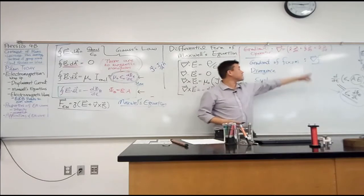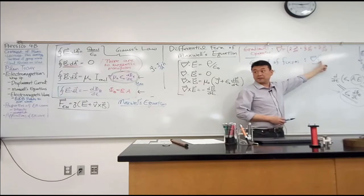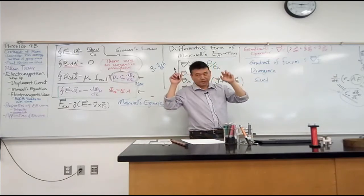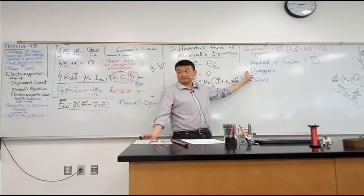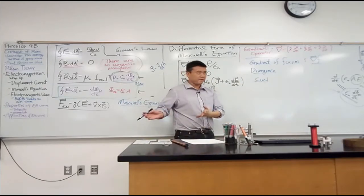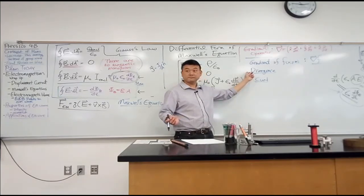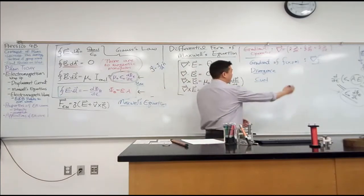Think of it this way: divergence is where you get a scalar back — like a dot product between two vectors. Curl is where you get another vector back — like a cross product. Divergence is the gradient operator dotted with some vector field. Curl is the gradient operator crossed with the vector field.